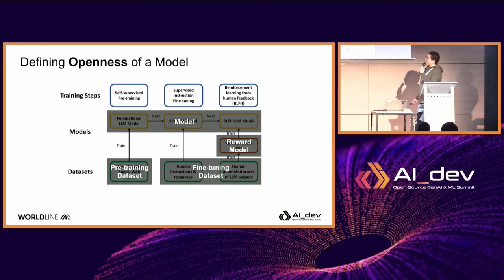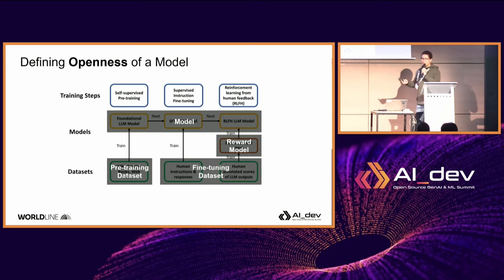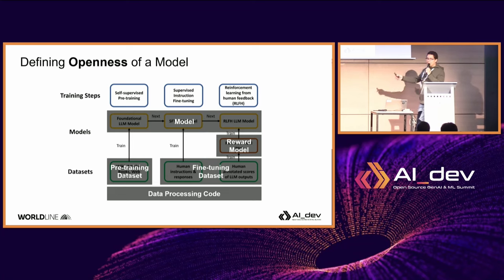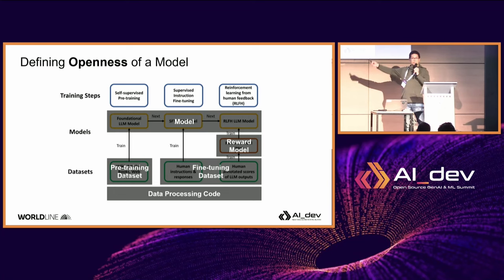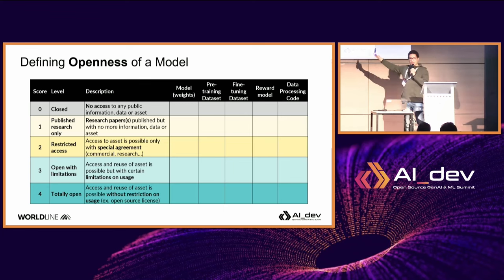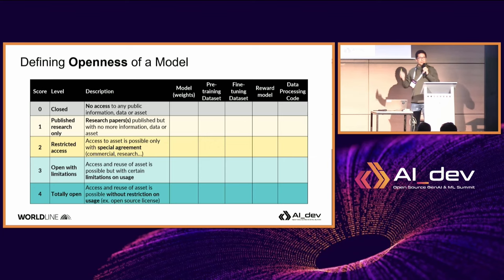First, you have to check the model. The model is not really about the neural network architecture, because when you have the research paper you basically know how to do that. What is important are the weights — the result of the training, the configuration of the neural network. Do you have access to that? Can you use it, deploy it at home, modify it or not? Second, the dataset — whether it's the huge amount of data used to pre-train the foundational model, or the smaller piece used to fine-tune the model.